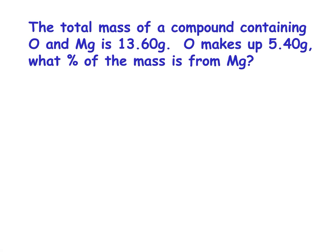Here's a way that you could have lab data come involved. And you wouldn't necessarily need GFMs. So the total mass of a compound containing oxygen and magnesium is 13.60 grams. Oxygen makes up 5.40 grams. What percent of the mass is from magnesium? There are a couple ways to do this. So what I could do is, that's my total, and this is oxygen. So 8.20. So this is from magnesium.